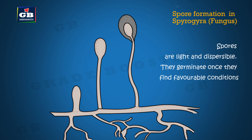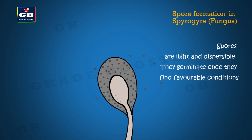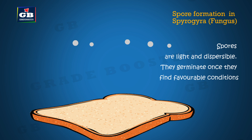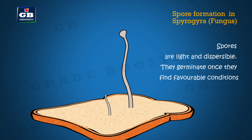Spore formation is another method of asexual reproduction. Spirogyra, a fungus, produces spores. If these spores find suitable conditions, they germinate into new organisms. This is how organisms reproduce asexually.